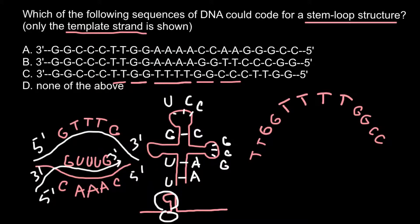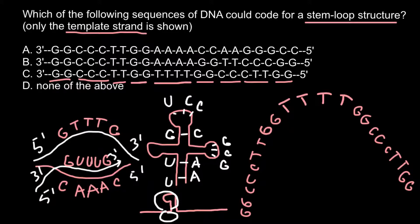Continuing the analysis of sequence C: we have cytosine and thymine, thymine on one side, and three cytosines on the other — again no base pairing. The two outermost bases are guanine and guanine on each end. So except for a slight possibility that two cytosines might pair with guanines, we shouldn't have a stem loop structure here, because the stem formed by only two cytosine-guanine pairs wouldn't be strong enough to hold this large loop.